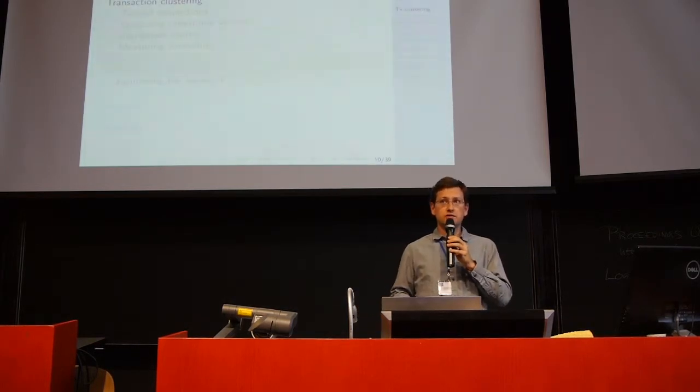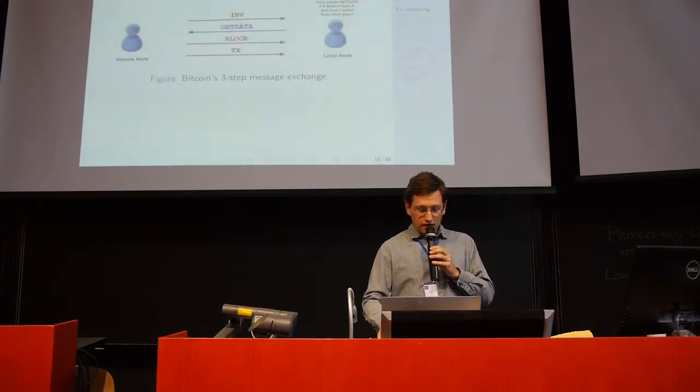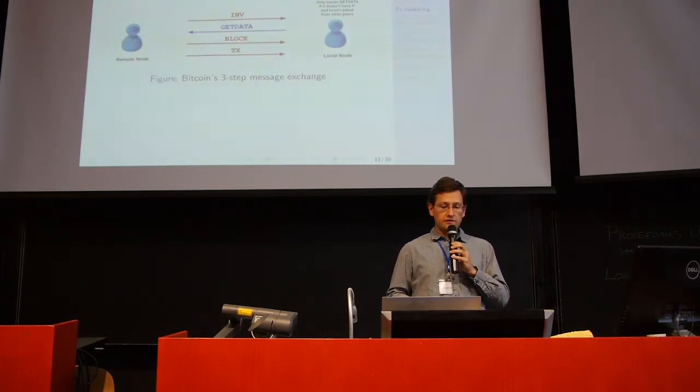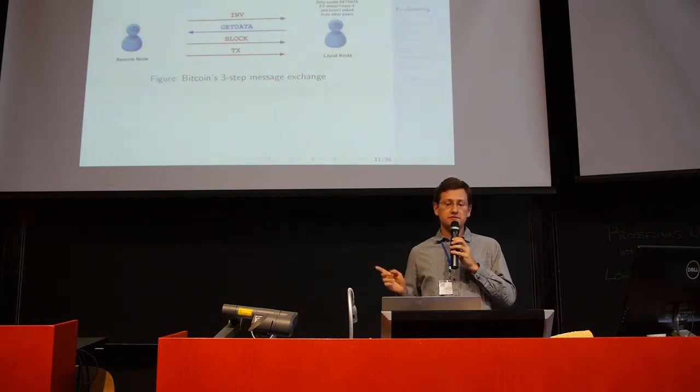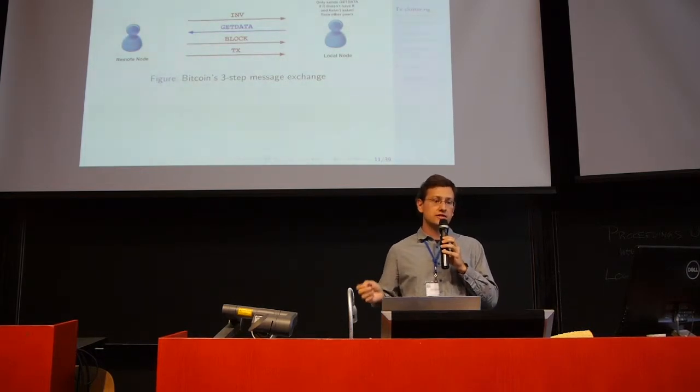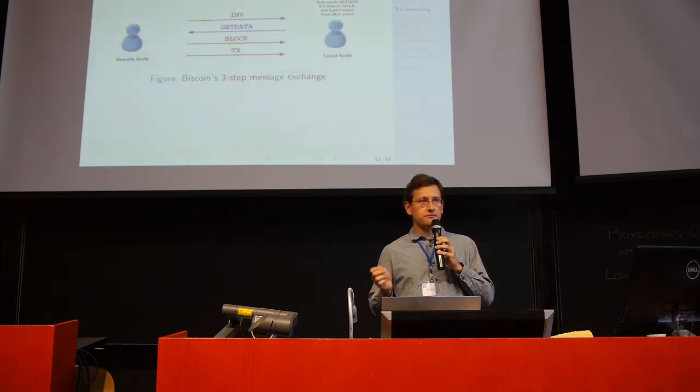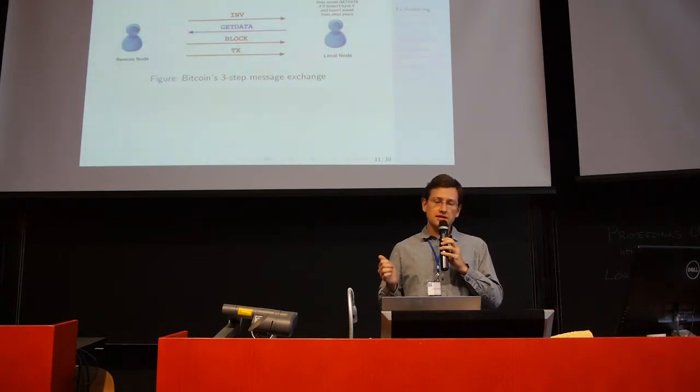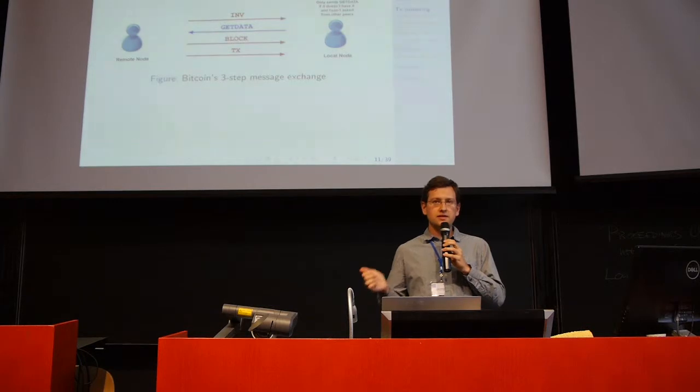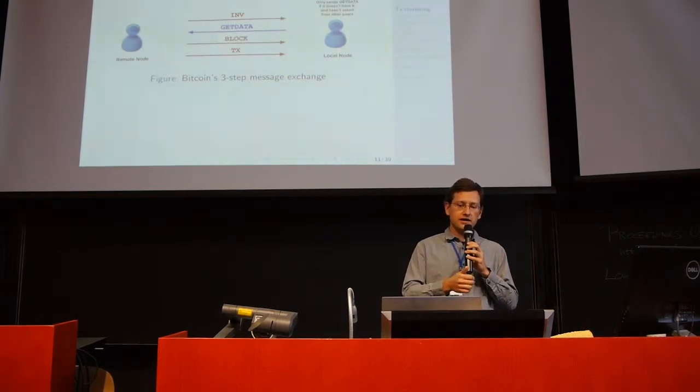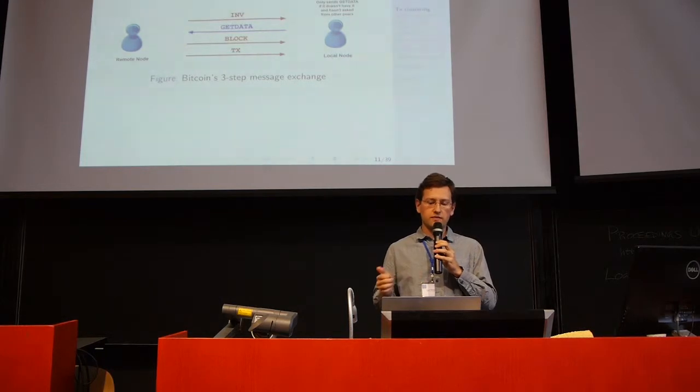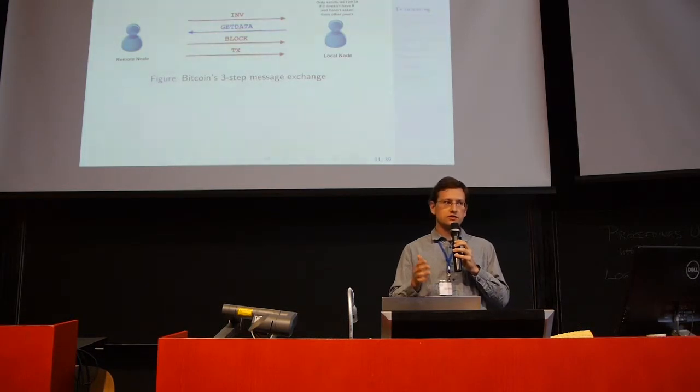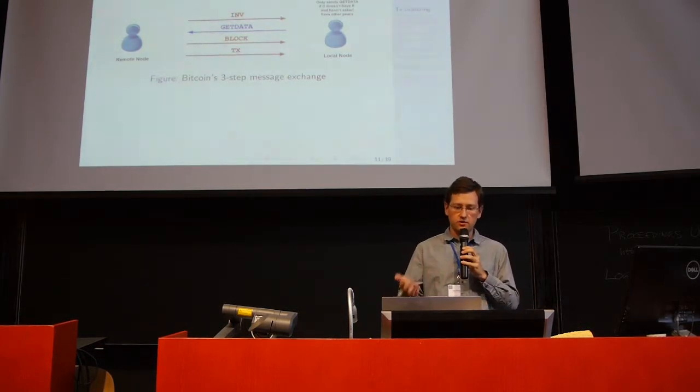Now we will describe how we actually do the transaction clustering. A brief background on how message propagation works in Bitcoin. If Alice is on the left and Bob is on the right, if Alice knows about a new transaction with a certain hash, she first announces this hash in an inventory message to Bob. And then, only if Bob is interested in this transaction, he replies with the getdata message, and then Alice replies with a tx message for a transaction or a block message for a block. The blocks and transactions are not just pushed, but the user who is interested in getting the full data must query this data from a neighboring node.